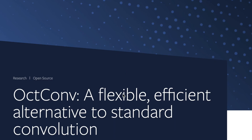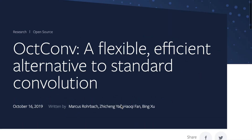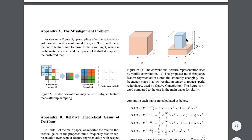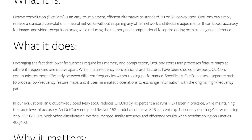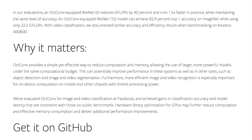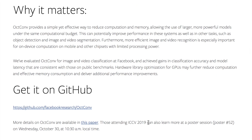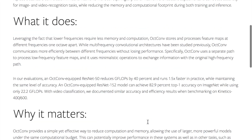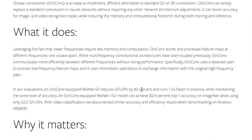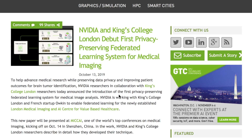Facebook's AI research blog also presented Octave Convolutions — a flexible, efficient alternative to standard convolution. The idea is best represented in their research paper image, which shows how they divide the high and low frequency spatial resolutions of intermediate feature maps in a convolutional neural network. It's an interesting idea to think about how exactly you're structuring the intermediate features of CNNs. It will be presented at ICCV 2019, and they present interesting results showing some advantage for the technique.